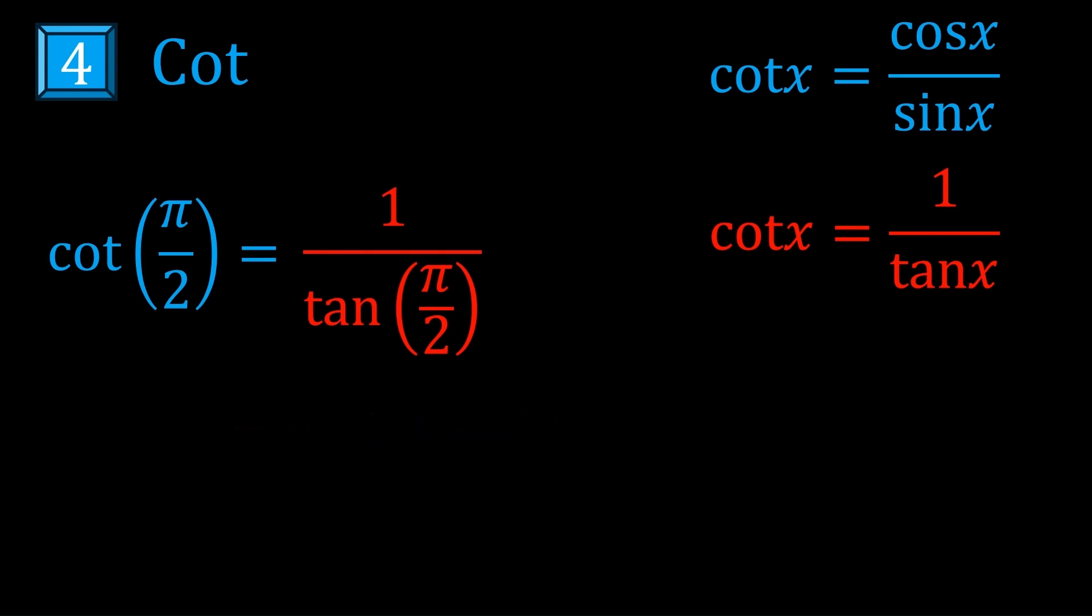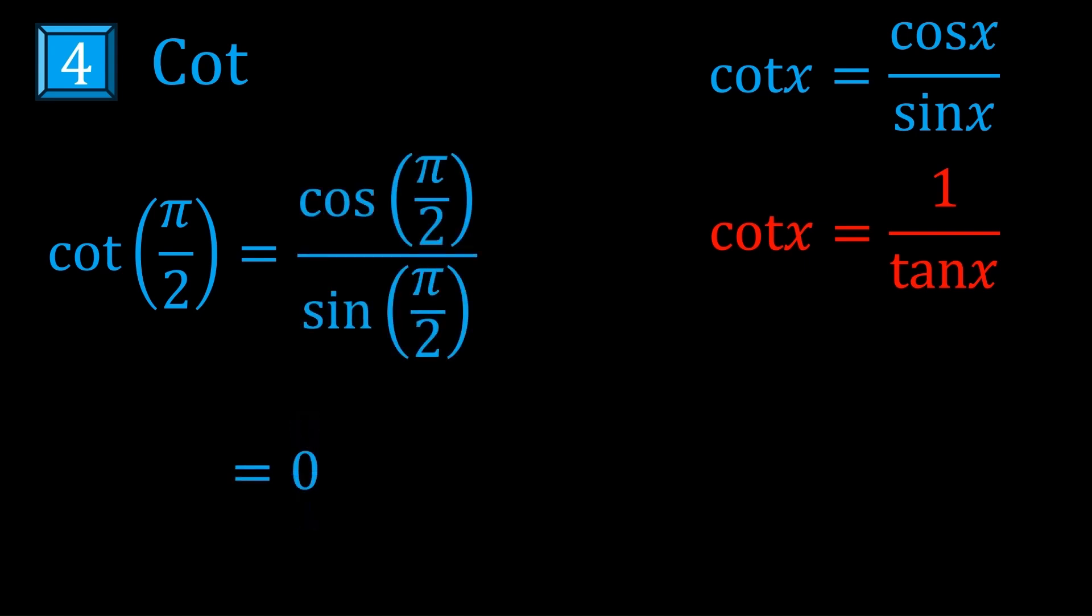Well, if you look carefully at the graph of tan x, tan pi on 2 is kind of like plus minus infinity. So 1 on that is 0. Cot pi on 2 is 0, it's not undefined. But if you use the first definition I just gave you, cos x on sine x, it's way easier to see that this is 0. Just keep in mind that both definitions are useful in different circumstances.